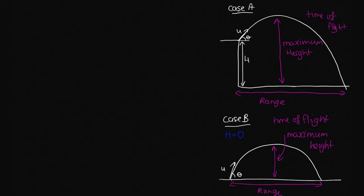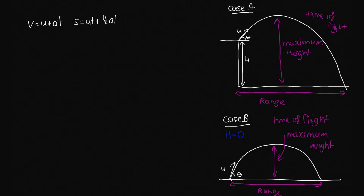In order to work out our equations, we'll be making use of our kinematic equations. We'll be using V equals U plus AT, we'll also need S equals UT plus a half AT squared, and we'll need V squared equals U squared plus 2AS.